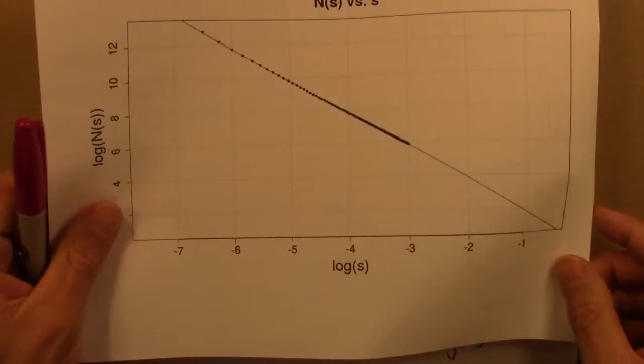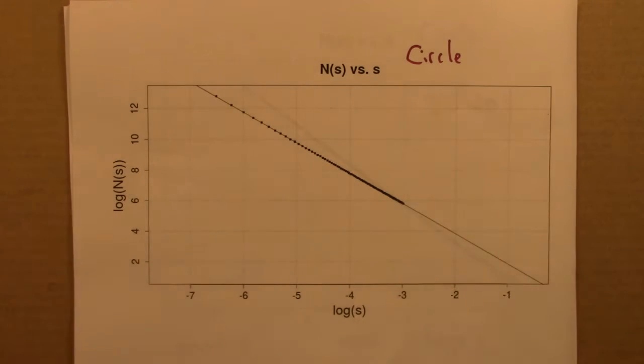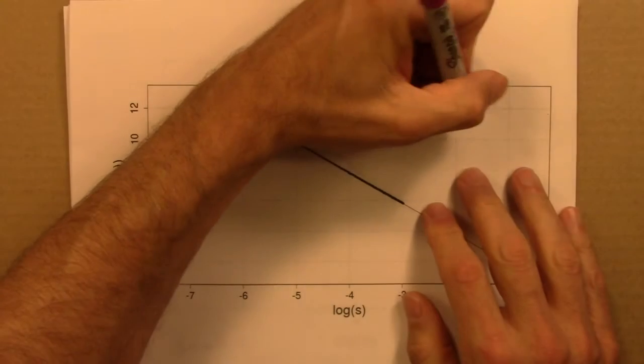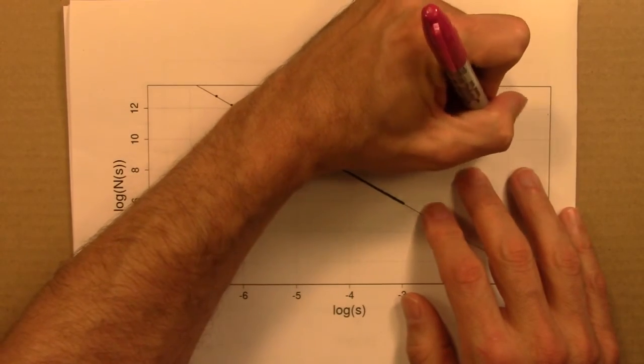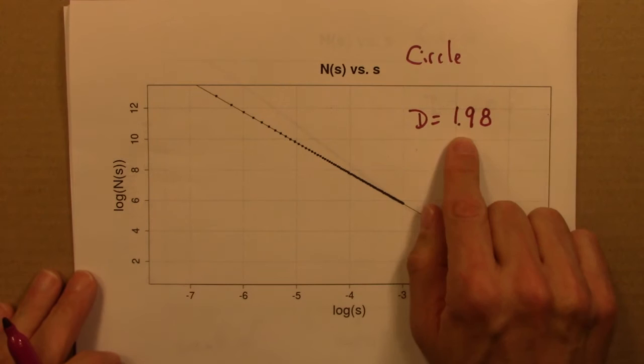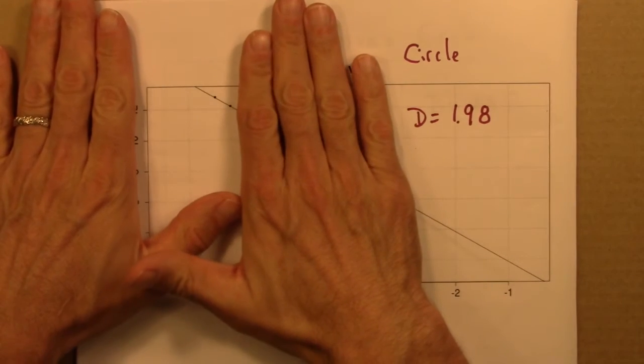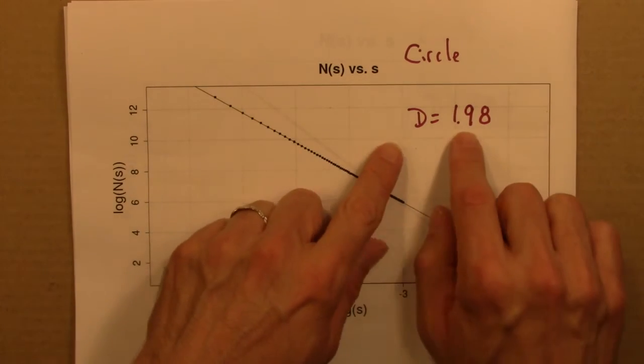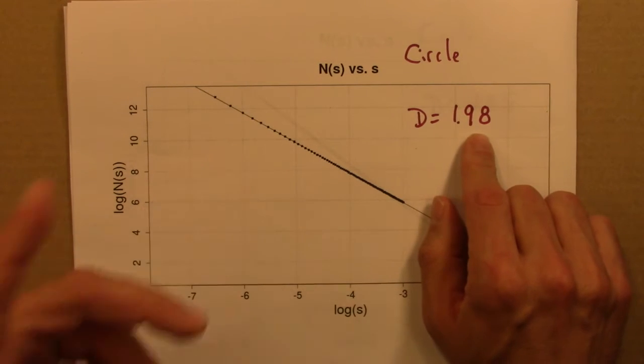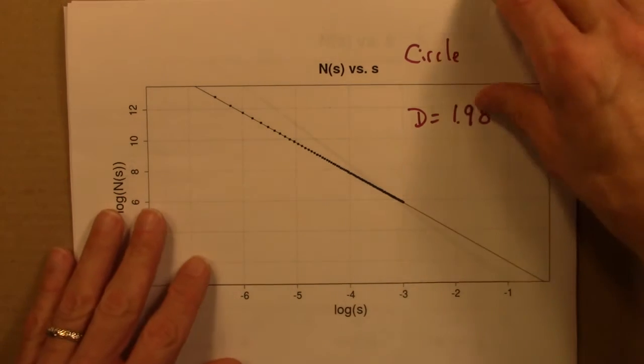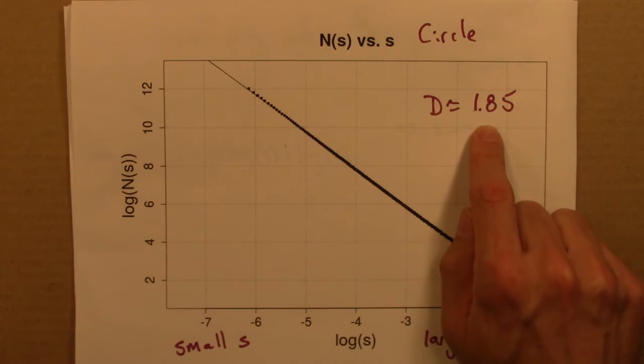And if I do that, if I just plot this data, then I get a dimension that's much better, 1.98. Presumably if I went smaller s still, I would get closer and closer to 2. So this is pretty good. I can live with this. Numerically estimating 1.98 when we're expecting 2, that seems alright. Here, numerically estimating 1.85 when we expect 2 is pretty disappointing.